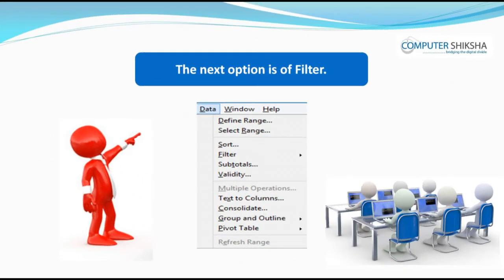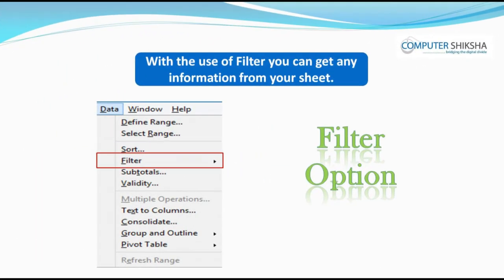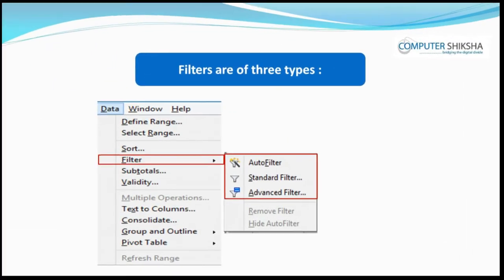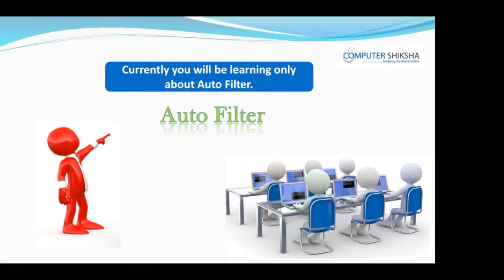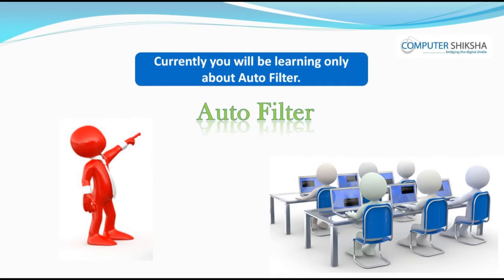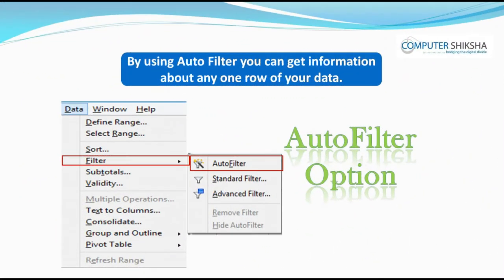Let us now learn about filter. With the use of filter, you can get any information from your sheet. Filters are of three types: auto filter, standard filter, and advanced filter. Currently, you will be learning only about auto filter. By using auto filter, you can get information about any one row of your data, or you can get the top 10 list.